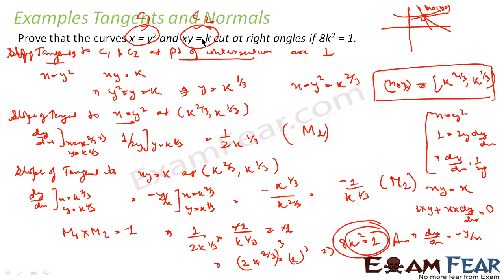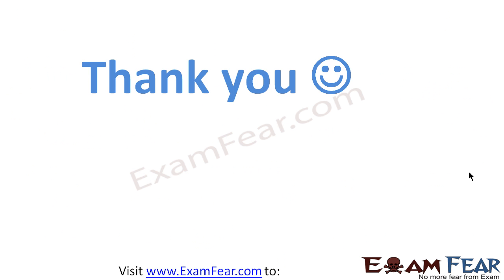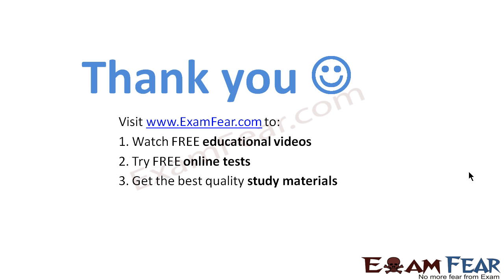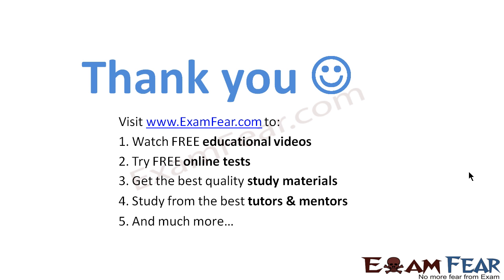So the slopes of tangents for these two curves at the point of intersection are perpendicular to each other. We found the intersection, found the tangent slopes (1/(2k^(1/3)) and −1/k^(1/3)), used m1 × m2 = −1, and proved that 8k² = 1. Visit examfreer.com to watch free educational videos, try free online tests, get the best quality study materials, and study from the best tutors and mentors. Thanks once again.